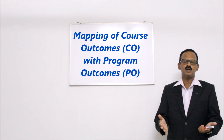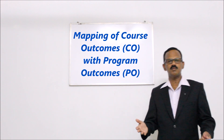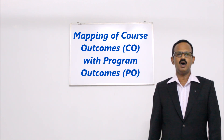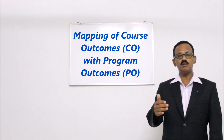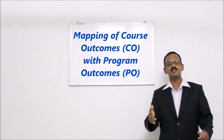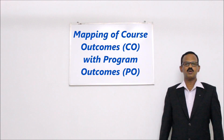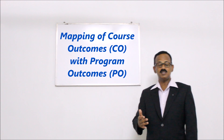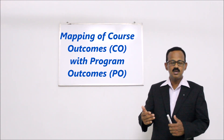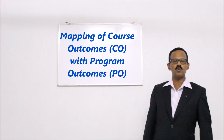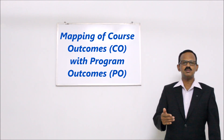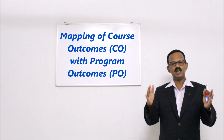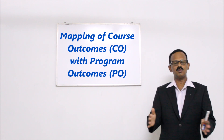Therefore, it is very clear that the entire accreditation process of outcome based education focuses on attaining the program outcomes. If the program outcomes are achieved, it automatically means we are through in the outcome based education and accreditation process. The first thing we have to do is determine how to attain these program outcomes. Program outcomes are attained through offering certain courses in the curriculum from the first semester to the eighth semester.